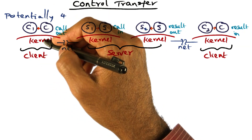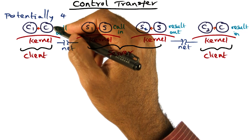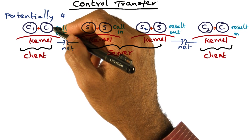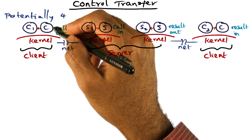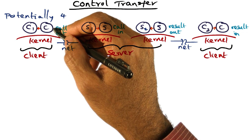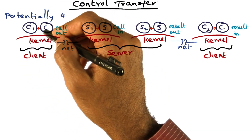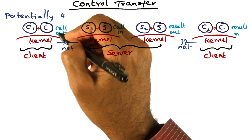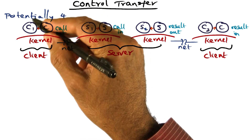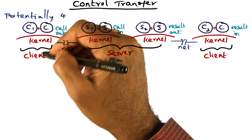This is the client machine, and on the client machine the client is making a call. When the call is made, the kernel recognizes that this client wants to make an RPC call. Since the semantics of RPC require that the client is blocked until the results are returned, the operating system on the client side will switch from the current client to another process — let's call it C1. This is the first context switch on the client box.